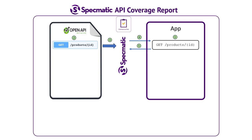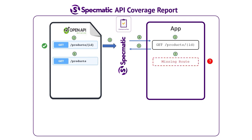If the implementation of the route matches the specification, then Specmatic will report the contract test as passed. Now, what if we document a new path in the specification but fail to actually implement it in the application? Any API consumers who use this spec will get a 404 error when they hit this unimplemented path.